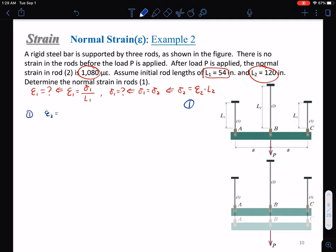In the first step, we already know that epsilon two equals 1080 microstrain, which is 1080 times 10 to the negative six strain.